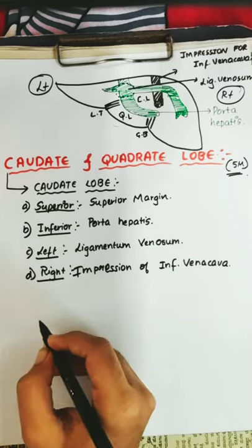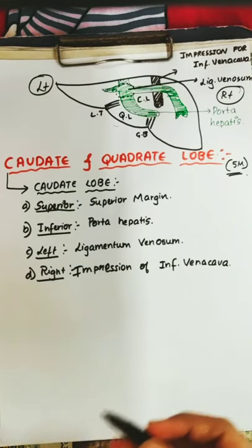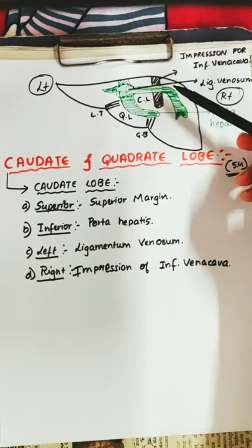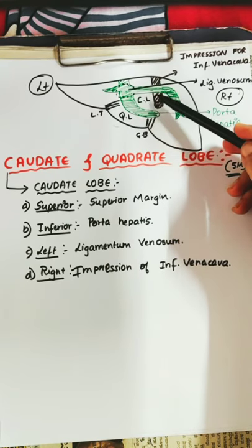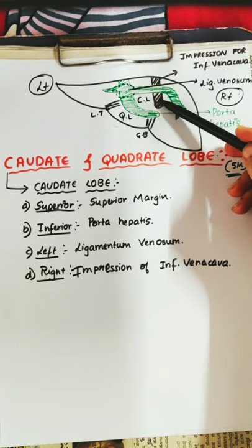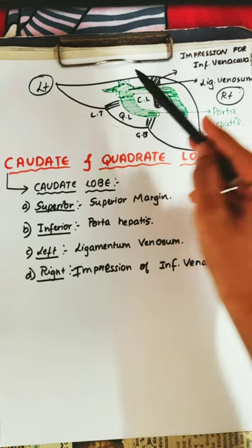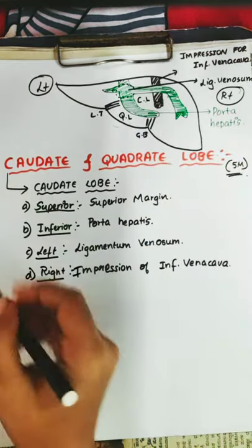So these are the structures of the caudate lobe. Superiorly it is continuous with the superior margin. Inferiorly there is the porta hepatis. On the right side there is the inferior vena cava, and on the left side there is the ligamentum venosum.